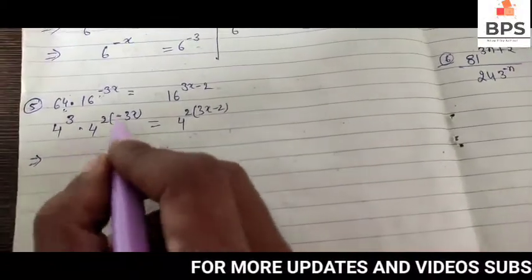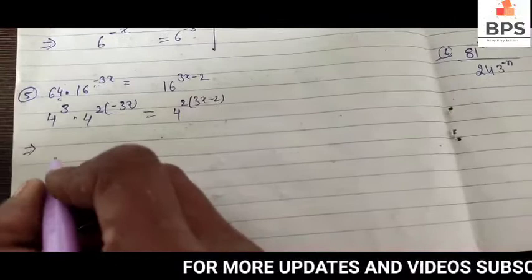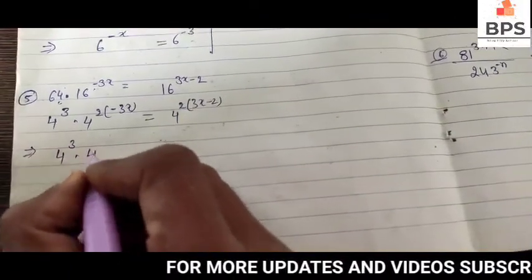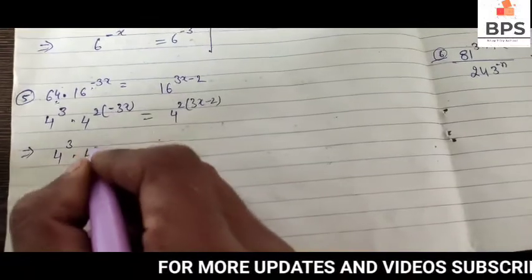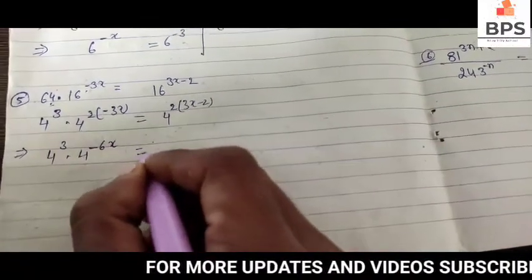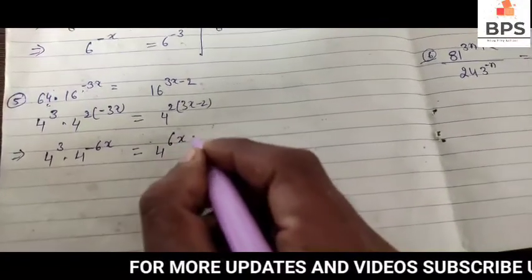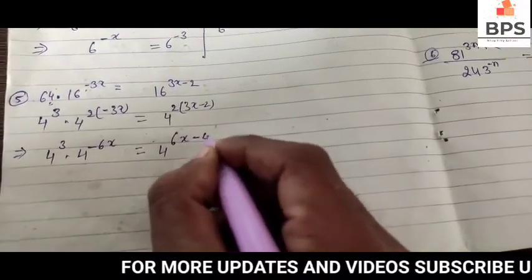This gives us 4 to the power 3 minus 6x equals 4 to the power 6x minus 4.